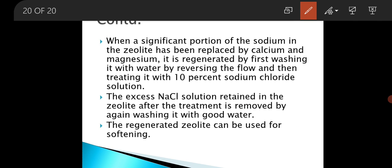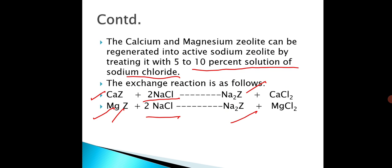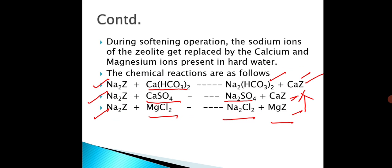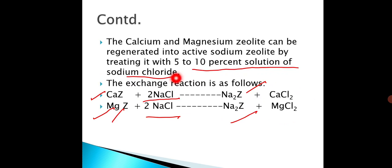When a significant portion of the sodium zeolite, Na2Z, has been replaced by calcium and magnesium, it is regenerated by first washing it with water by reversing the flow, and then treating it with a 10 percent solution of NaCl sodium chloride. After regeneration, the sodium zeolite is again formed.